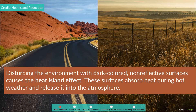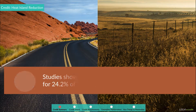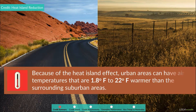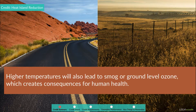These surfaces absorb heat during hot weather and release it into the atmosphere. Studies show that urban heat islands are responsible for 24.2% of global warming. Because of this effect, urban areas can have air temperatures that are 1.8 to 22 degrees Fahrenheit warmer than surrounding suburban areas. Higher temperatures also lead to smog, or ground-level ozone, which creates consequences for human health.